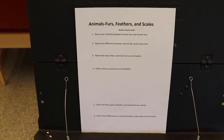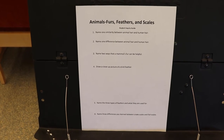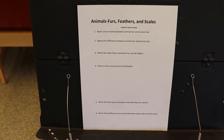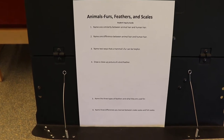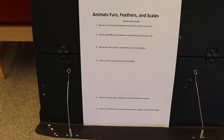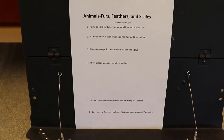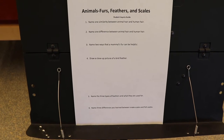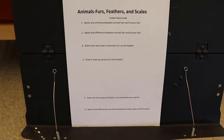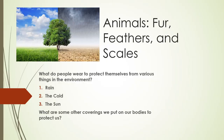That's all for part one. The next questions are: Number four, draw a close-up picture of a bird feather. Number five, name the three types of feathers and what they are used for. Number six, name three differences you learn between snake scales and fish scales.